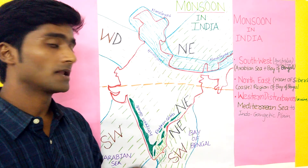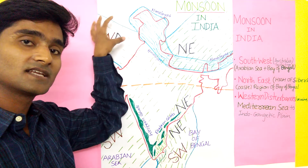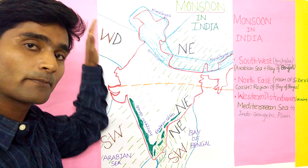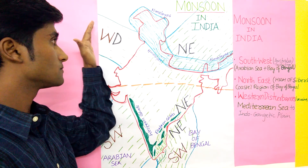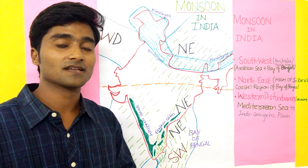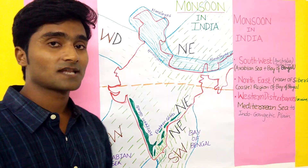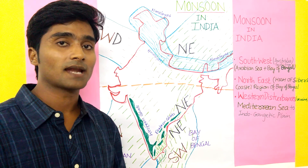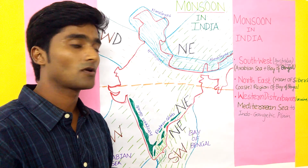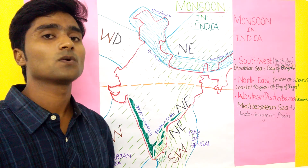The Indo-Gangetic Plain is a vast plain region of India. Wind blows from high pressure to low pressure, so it gives rain in the winter season. This Western disturbance is very useful for Rabi crops — farmers can cultivate wheat, barley, and maize. So for farmers and agriculture in January and February, the Western disturbance is very beneficial.